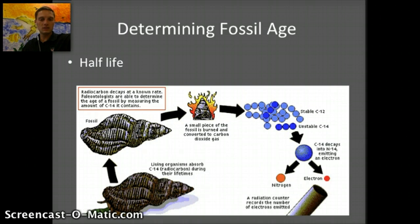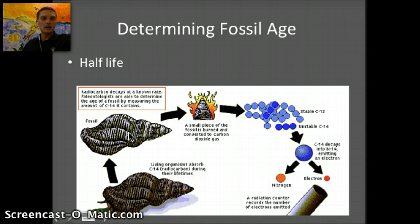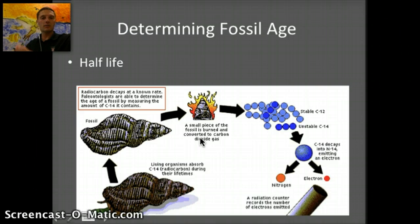This allows us to determine how old something is. Say we've got a fossil — something dies during its lifetime and it accumulates carbon-14. After it dies, it stops collecting carbon-14, and the carbon-14 begins to break down to nitrogen-14. Someone comes along, finds the fossil, takes a small piece, and burns it to convert it to carbon dioxide gas. The stable carbon is compared to the unstable carbon — the change to nitrogen-14 — and by measuring how much carbon-14 and nitrogen-14 is present, we compare that to the fixed rate of decay to figure out approximately how old the sample is.